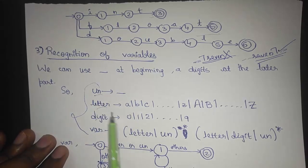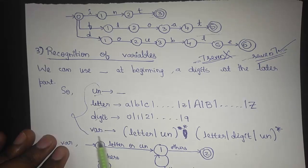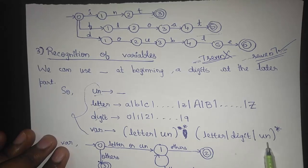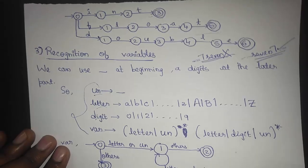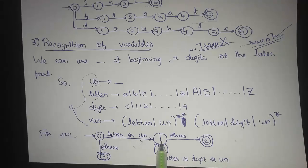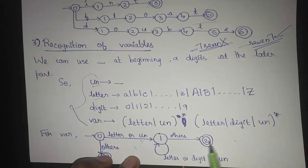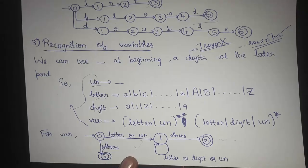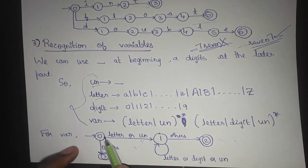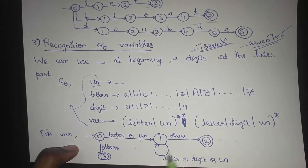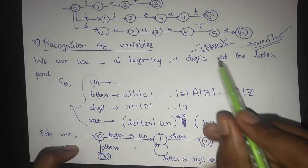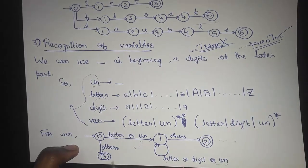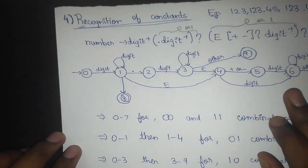In the regular definition, UN represents underscore combined with all uppercase and lowercase alphabets; digit covers zero to nine; and variable is defined as letter or underscore followed by zero or more of letter, digit, or underscore. In the state transition diagram, when we get an underscore or a letter we go to the first state, and when we get any other valid transition we go to the final state. The initial state cannot directly be the final state because we must consider letter, digit, or underscore conditions after the first character.